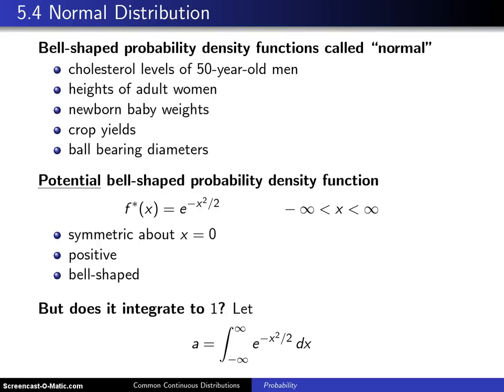So far three distributions that often arise in applications have been introduced: the uniform distribution, the exponential distribution, and the gamma distribution. This is a fourth distribution and might very well be the best known of all the distributions. It is known as the normal distribution.